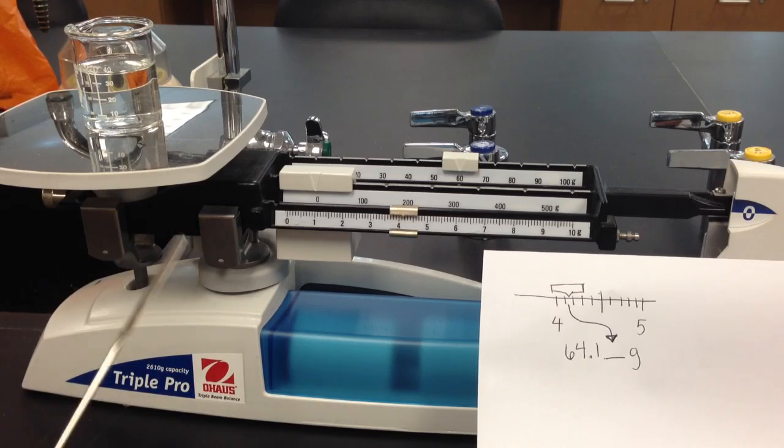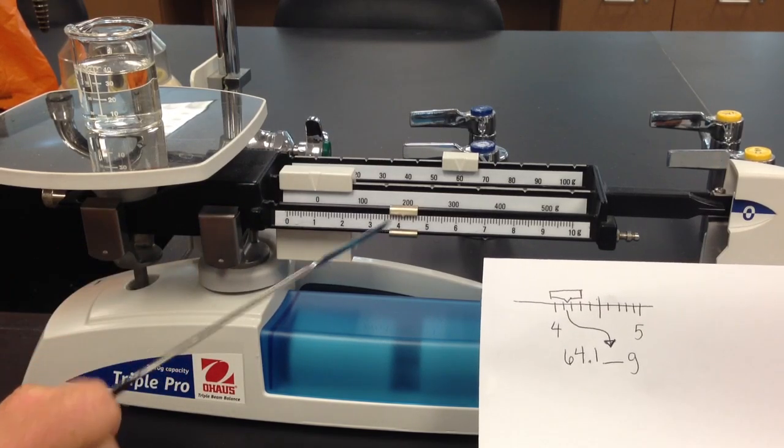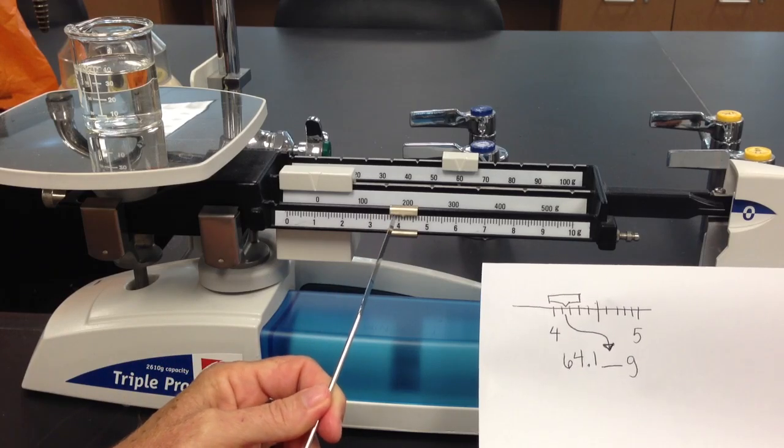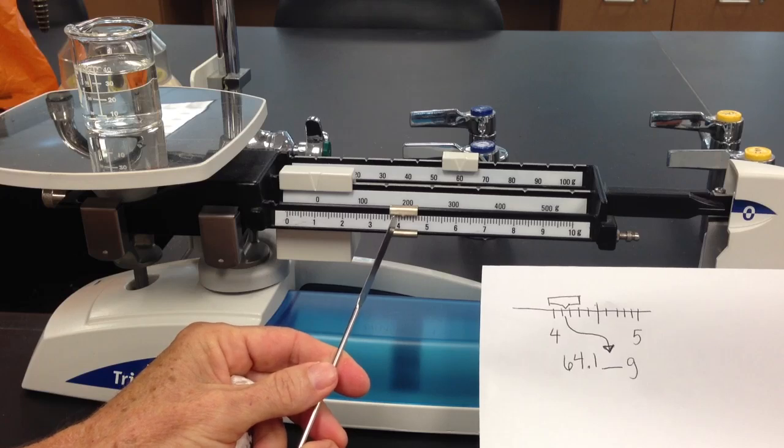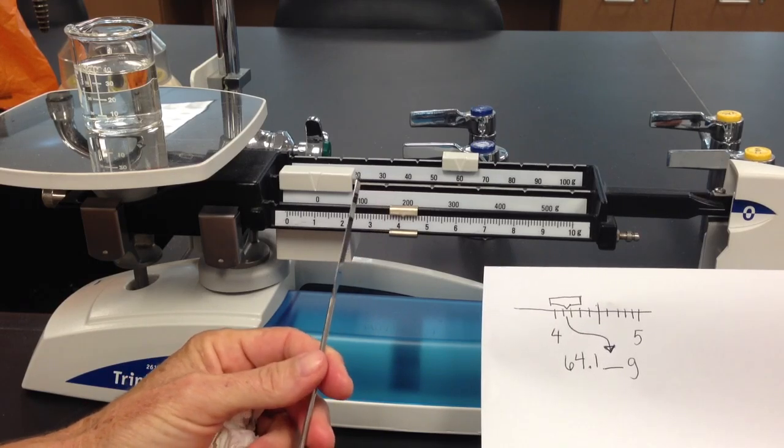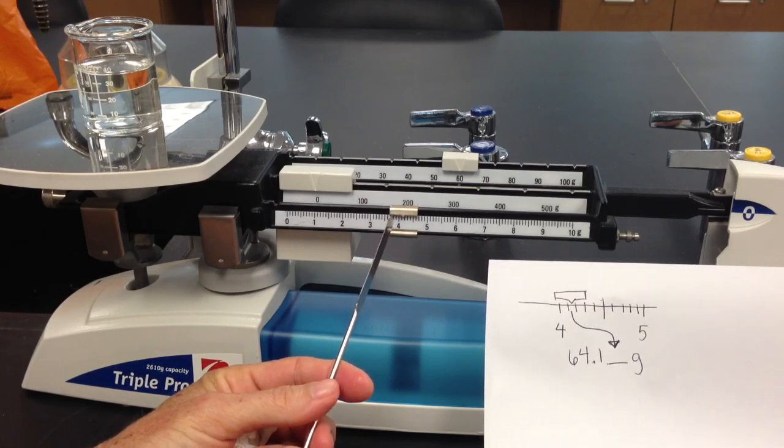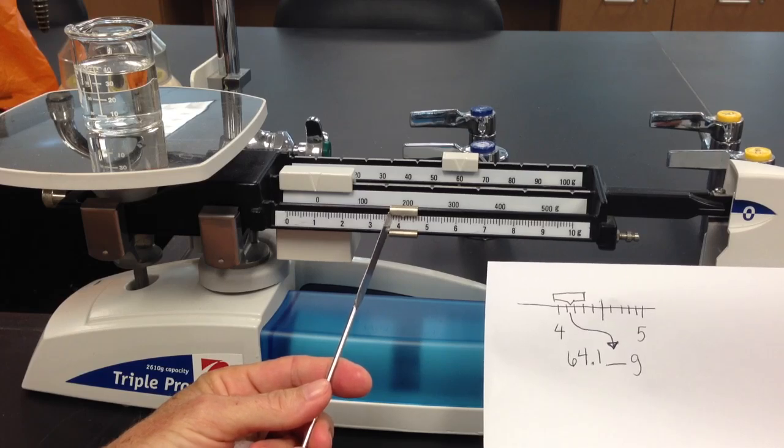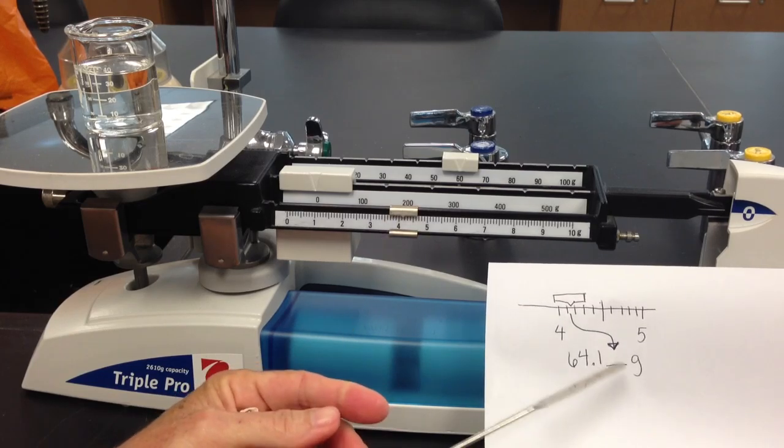Now we're going to determine our mass. We have 60. 64 is our second certain digit. Our next certain digit is 64.1, and we need to estimate our last digit—that will be up to you, the observer. Try to get your eye right in front of where you're reading your mark, and we're going to say that this beaker weighs 64.16 grams.